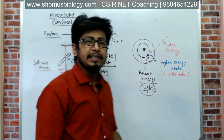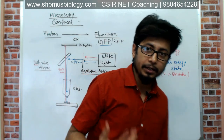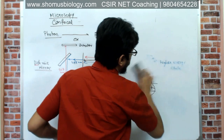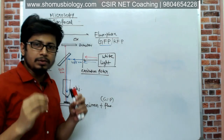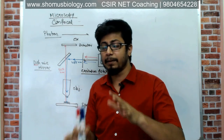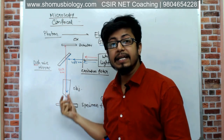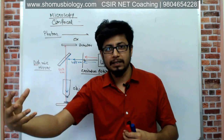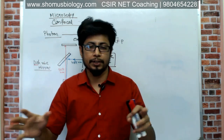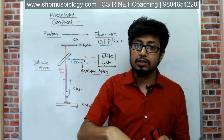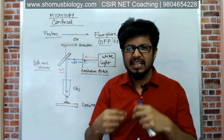Now in confocal microscopy, there are a few differences in the setup. The idea is the same — we use an energy source to excite the fluorophore in the sample, and the sample emits light recognized by the detector to form a picture. But the light source in this case is different.